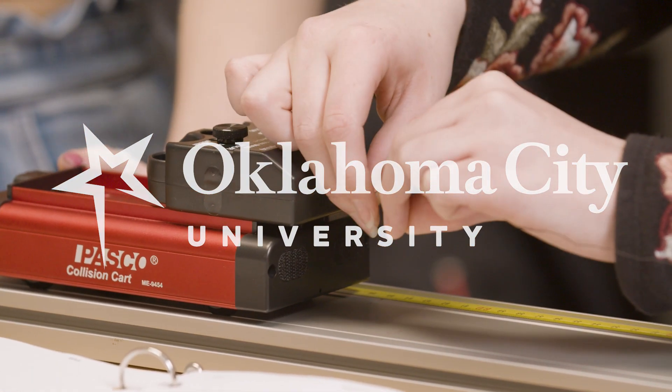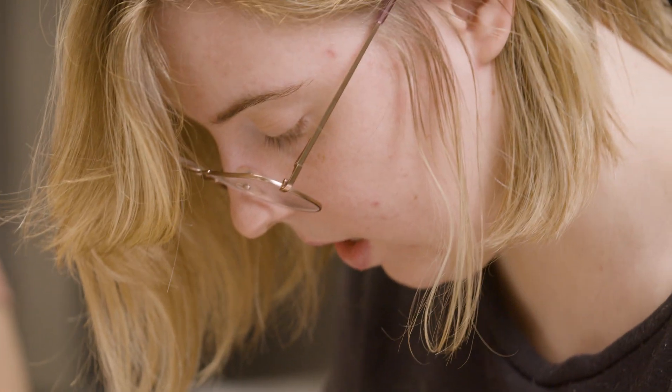The dual degree in engineering program is a collaborative program between OCU and Washington University in St. Louis. Students spend three years at OCU studying liberal arts as well as a rigorous preparation program in math and science. They go on to Washington University in St. Louis and complete the rest of their engineering program there.